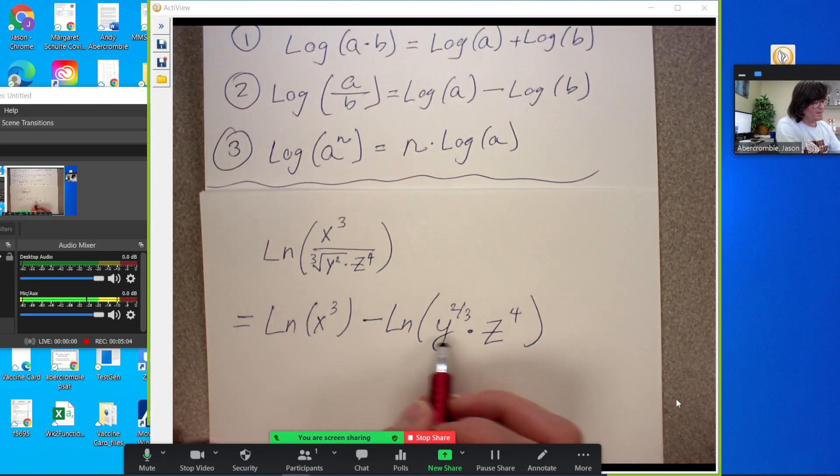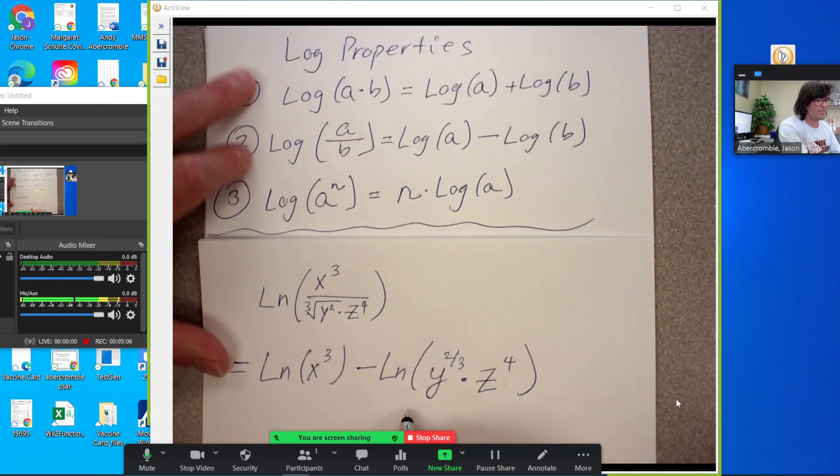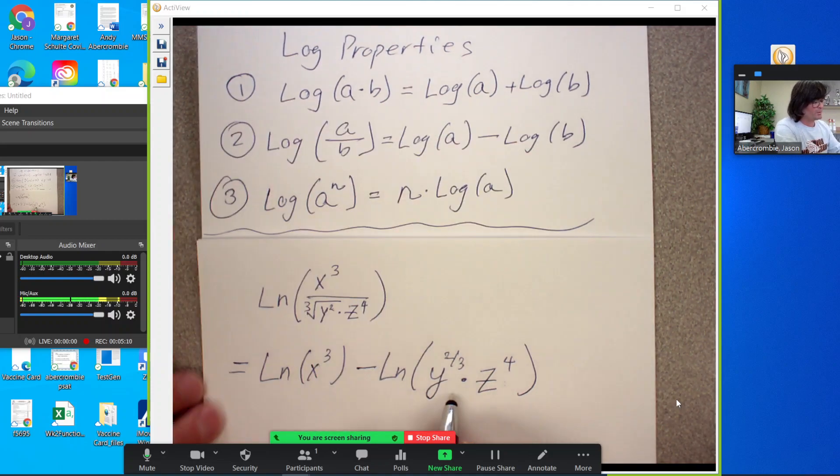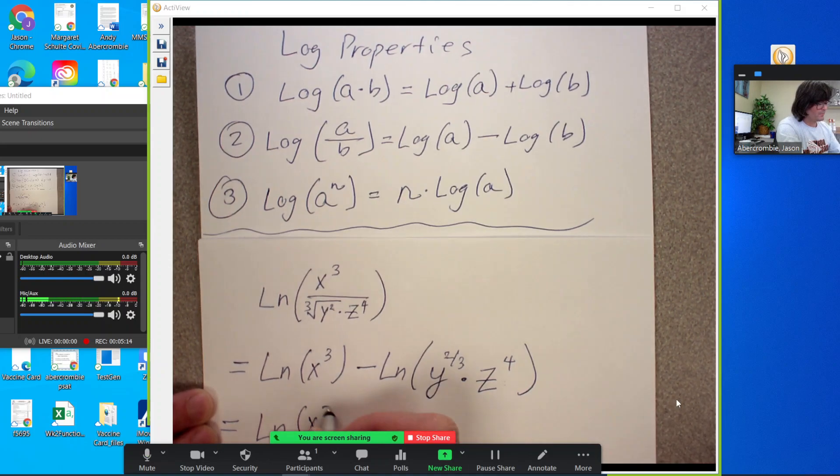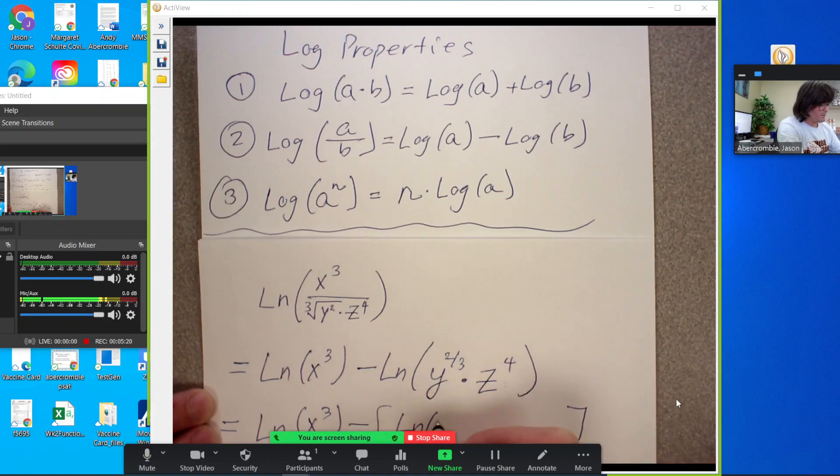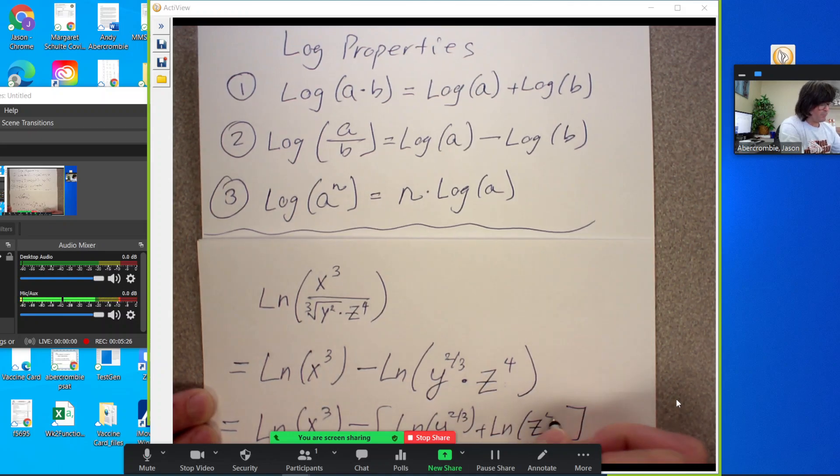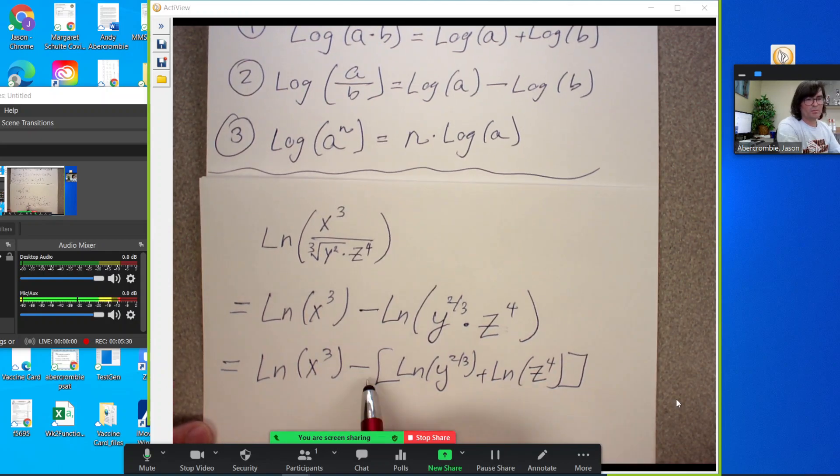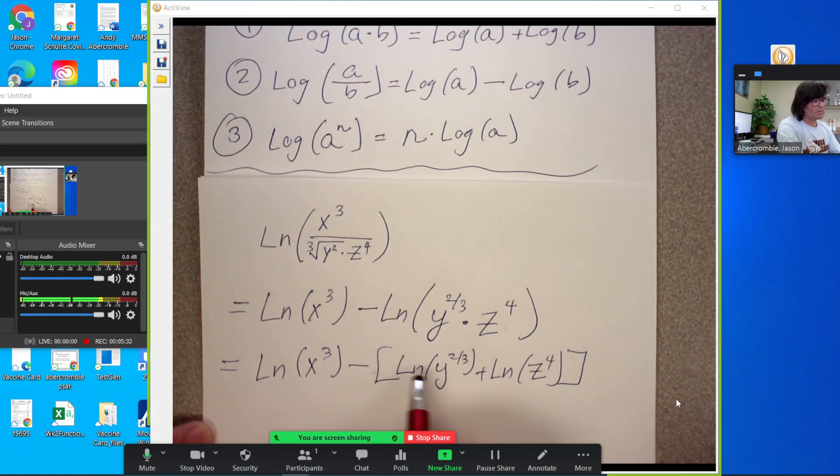And we can now break this up using the first log property. Two things multiplied together in a log. It can be rewritten as two logs added together. Minus. I'm going to make brackets here. Do natural log of y to the two thirds plus natural log of z to the fourth. And I wrote the brackets to remind myself that minus gets distributed to both of these.